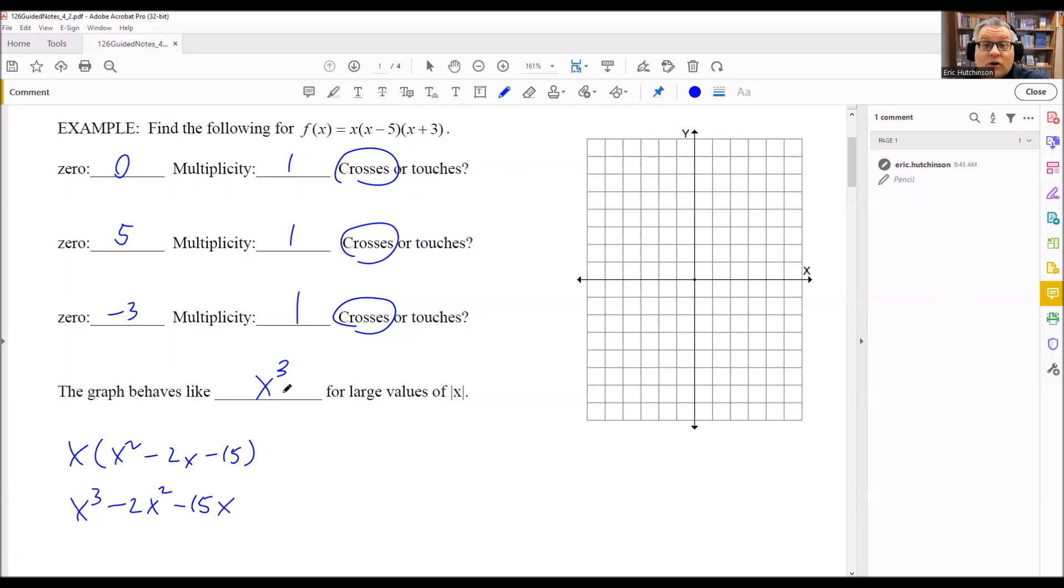So basically what this is saying is, what is the graph going to look like if I zoom really far out? What does the graph resemble? And we're going to say that it resembles x cubed. And that kind of has to do with the end behavior on this as well. It's going to have an end behavior that looks like x cubed.